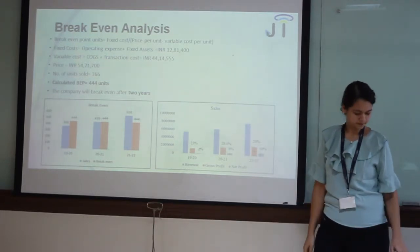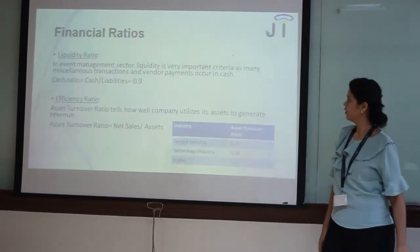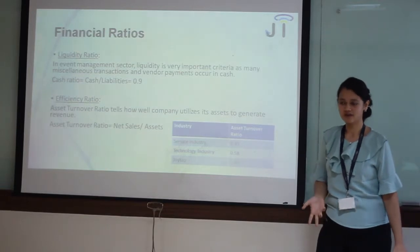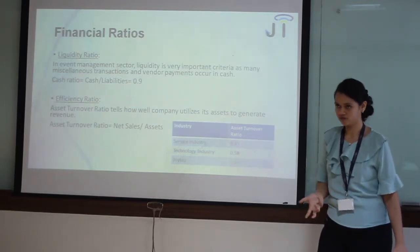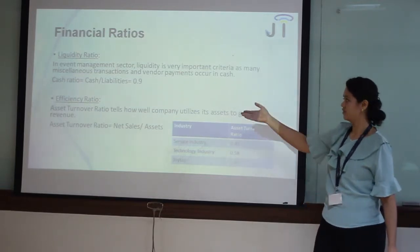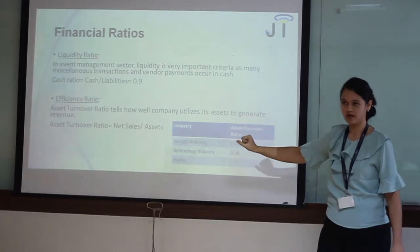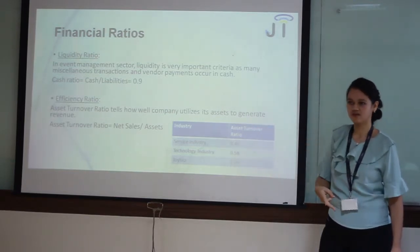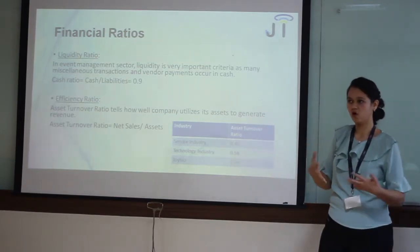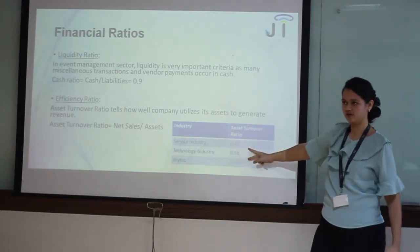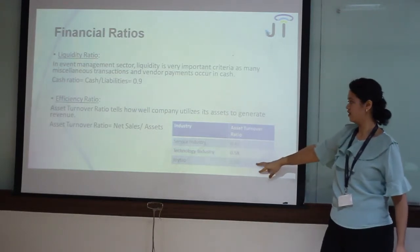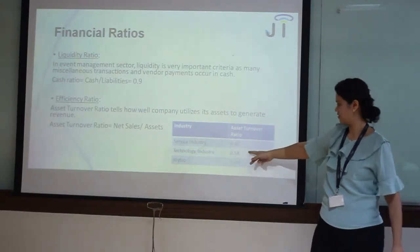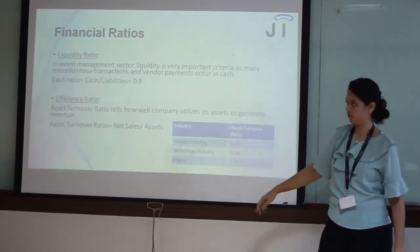These are the financial ratios. We know the event industry is really dependent on cash flows, so we have taken a cash ratio of 0.9. We have also compared it to two major industries that we are a combination of: service and technology. The asset turnover ratio we aim to deliver is 1.94, as compared to 0.5 and 0.45 in service and technology respectively.